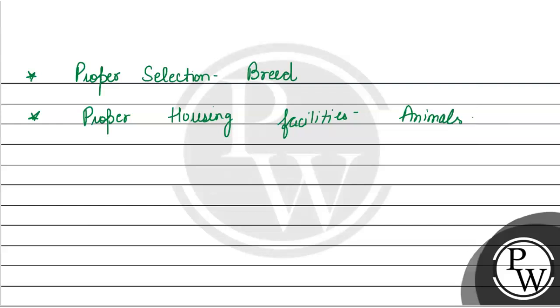Next, we can say proper water supply. We need to ensure that there is proper water supply available for the animals.